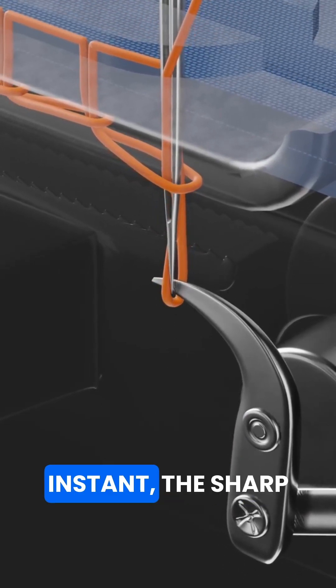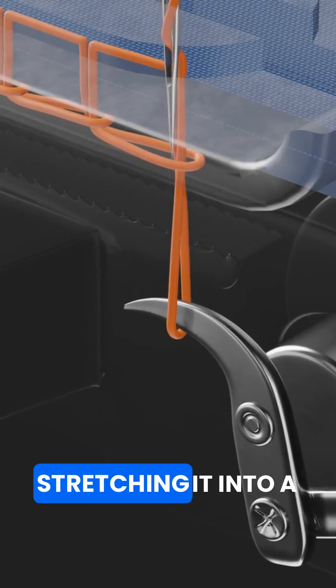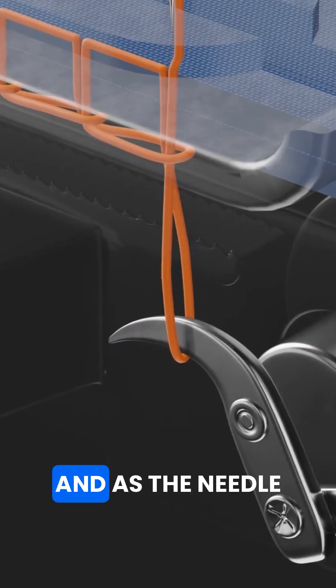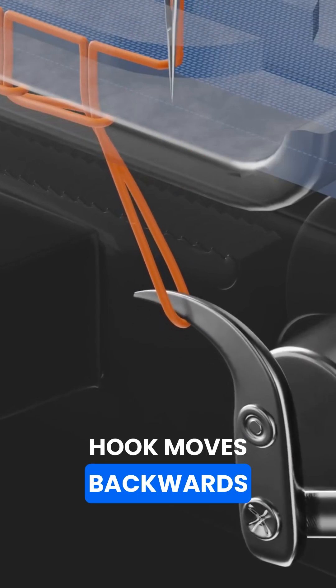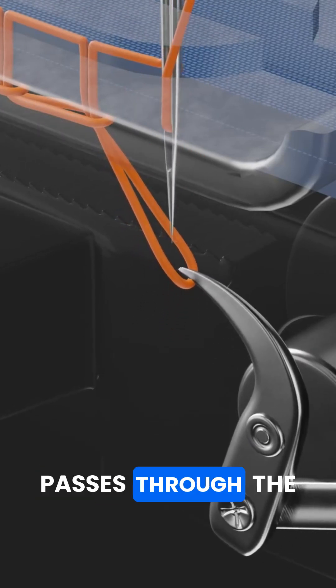At exactly this instant, the sharp hook catches the bulge, stretching it into a loop. And as the needle comes back down, the hook moves backwards, and the needle passes through the loop.